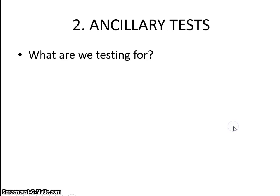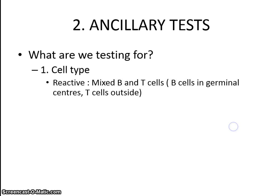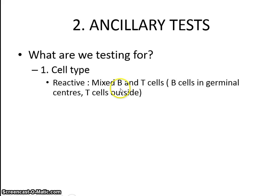Now, ancillary tests — before we talk about individual tests, we need to also decide what we are actually testing for. There are two main things: the first is the cell type. We want to know in a reactive lymph node whether we are looking at a mixed cell population. If we see a combination of B cells and T cells — B cells usually in germinal centers and T cells outside — then it is more convincing of a reactive proliferation.